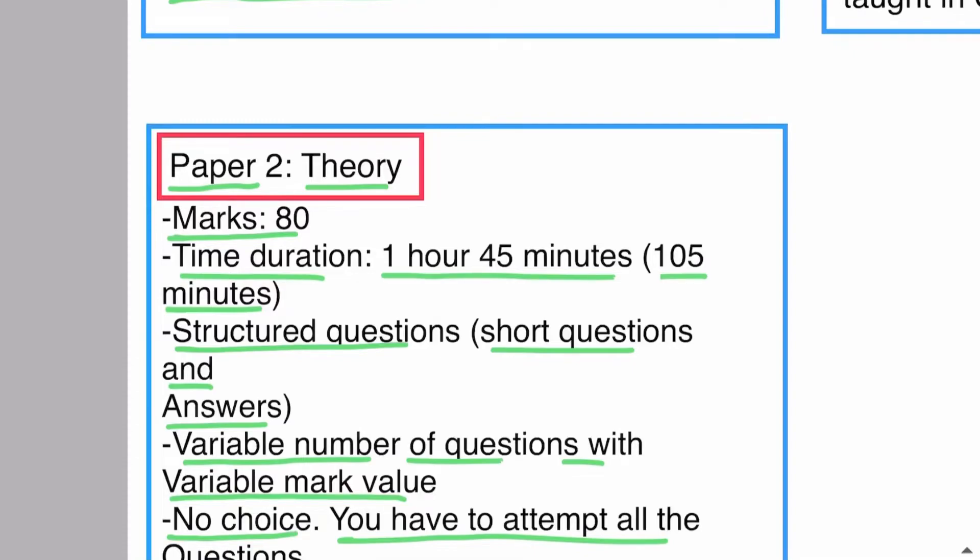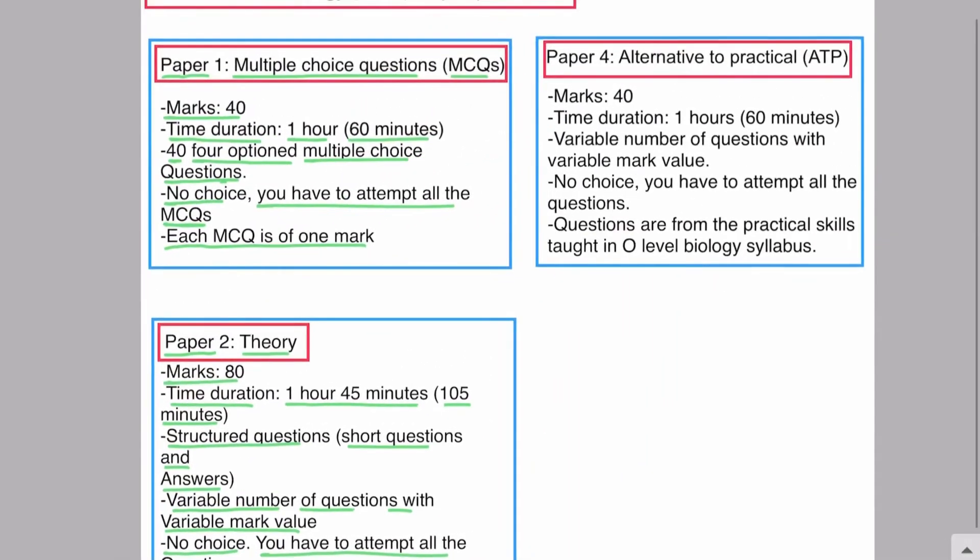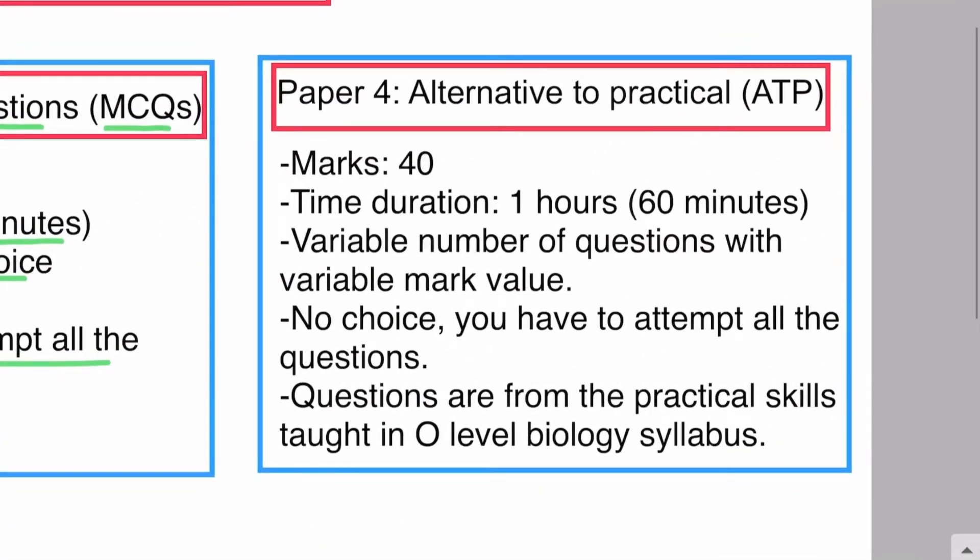Let's talk about the next paper—Paper 4, which is known as Alternative to Practical paper or ATP. In Pakistan, students choose Paper 4 instead of Paper 3.